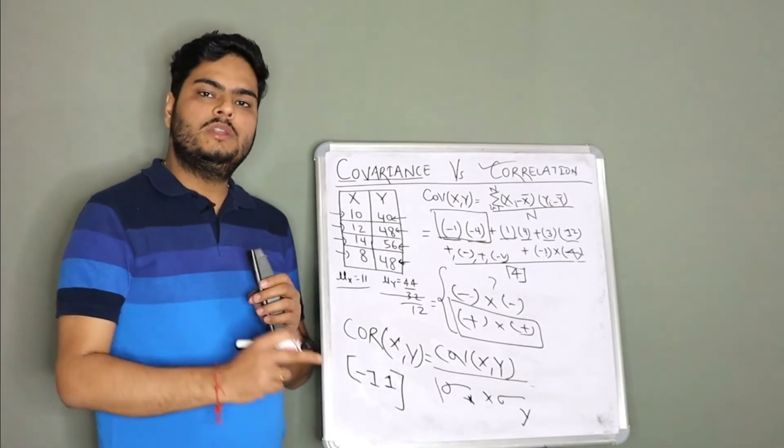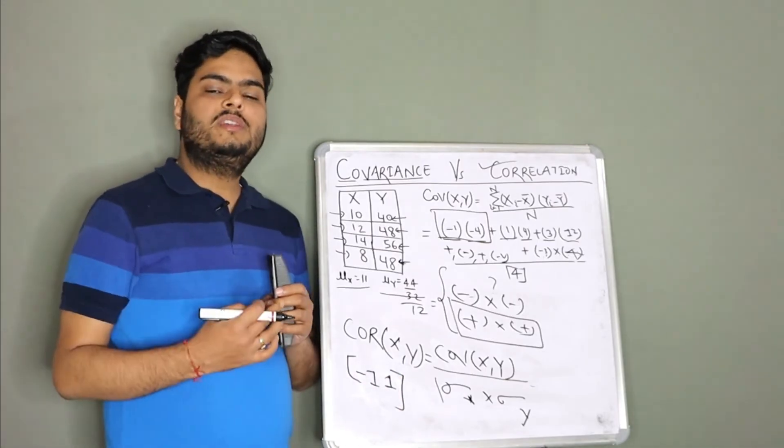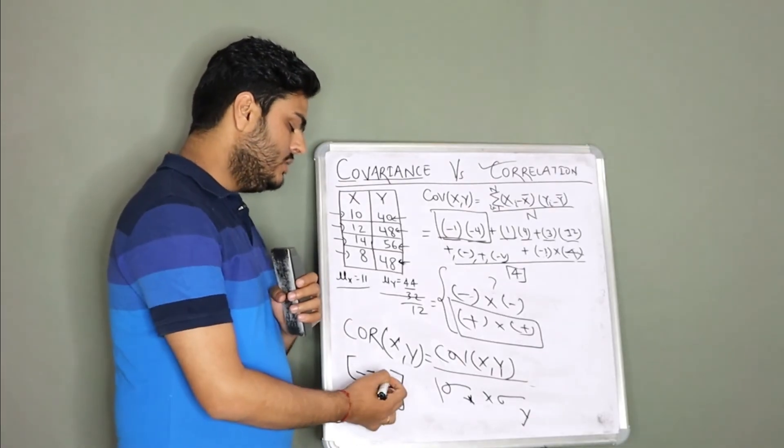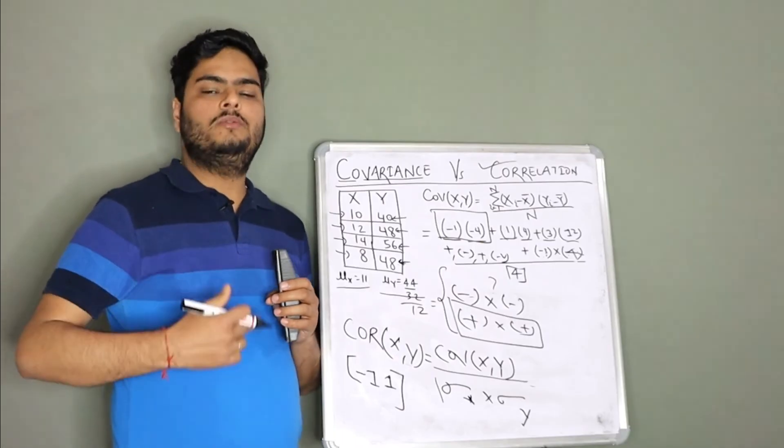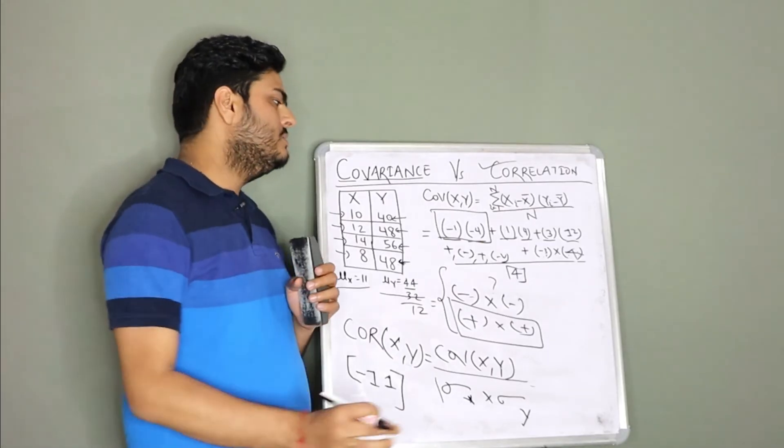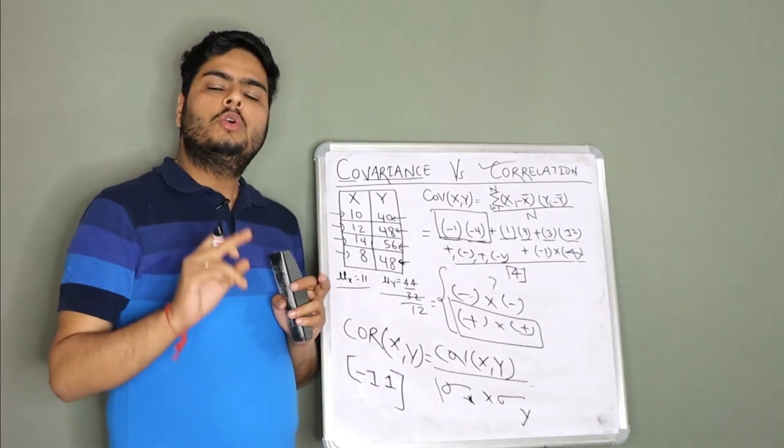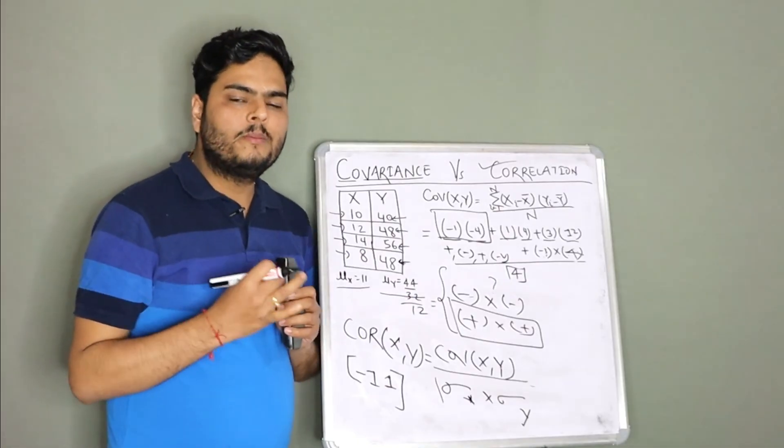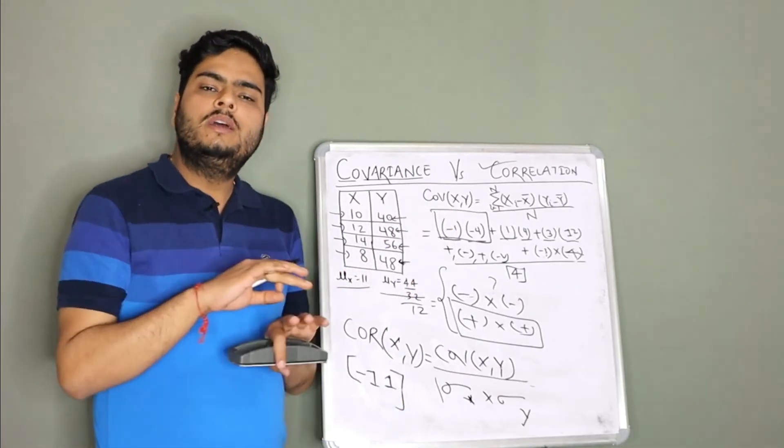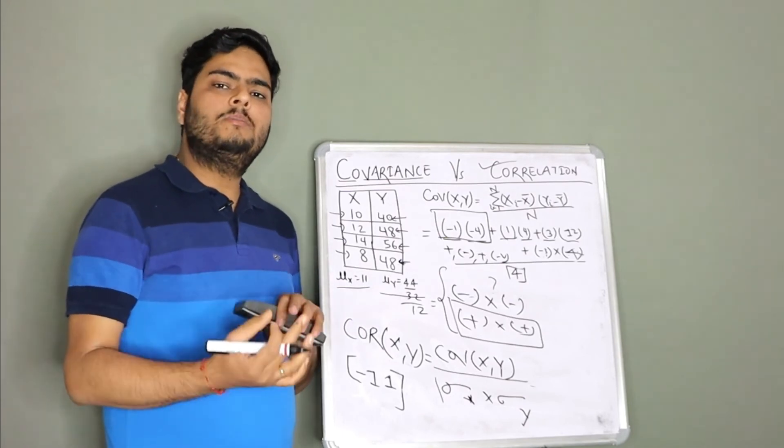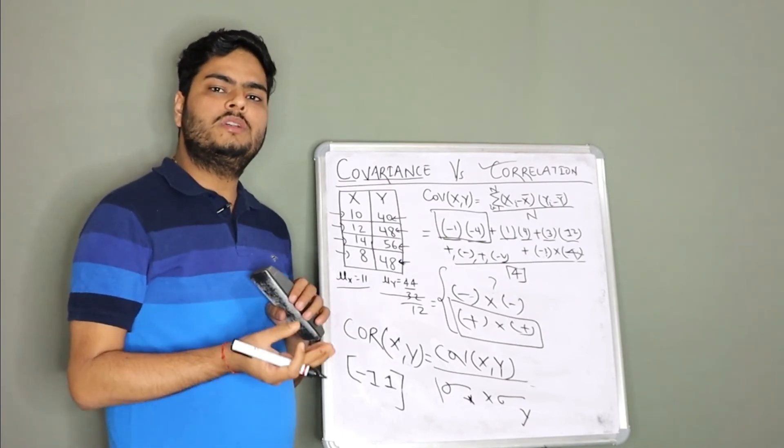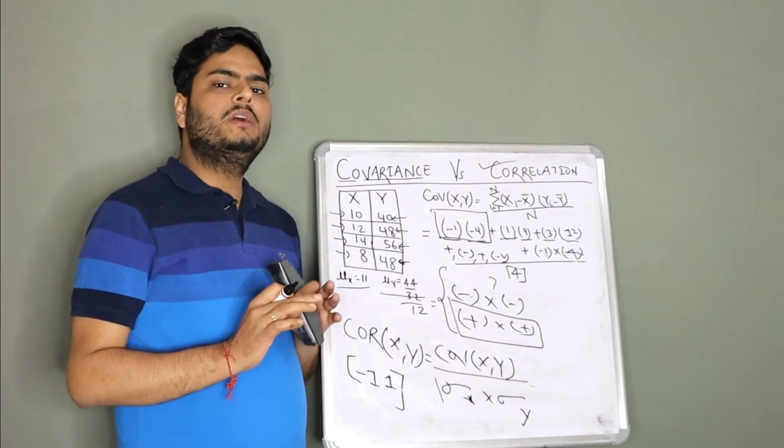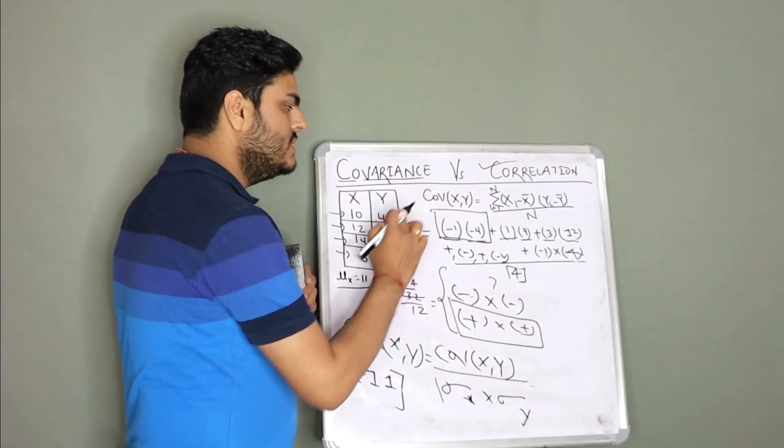And if our correlation value is nearer to minus 1, we say strong negative correlation. If our correlation value is nearer to plus 1, we say strong positive correlation. Only one basic difference between covariance and correlation: covariance gives you just the direction, correlation gives you direction and strength both. Correlation does not give you any unit of measurement, for example kilogram, centimeters, meters, cubic meters, no. Covariance will give you units. That is the difference between correlation and covariance.